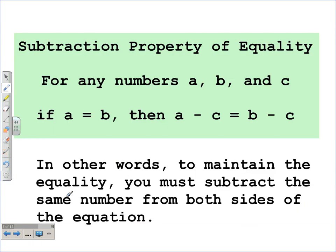The subtraction property of equality reads: for any numbers a, b, and c, if a is equal to b, then a minus c is equal to b minus c. In other words, we must maintain equality by subtracting the same number from both sides. This is very similar to the addition property.